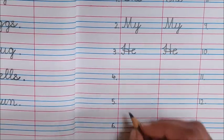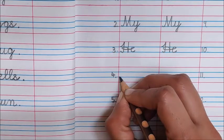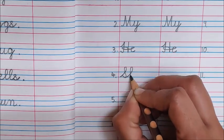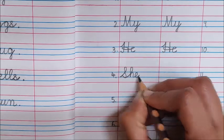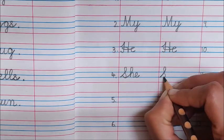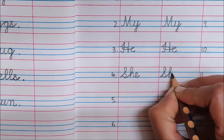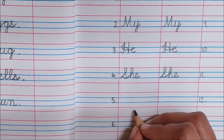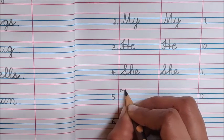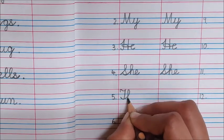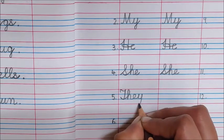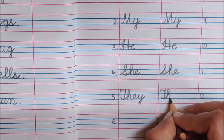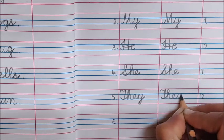Next word is She. What is the spelling of She? S-H-E She. So write down S-H-E She. S-H-E She. Next word is They. T-H-E-Y They. T-H-E-Y They.